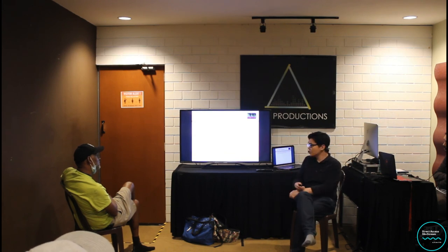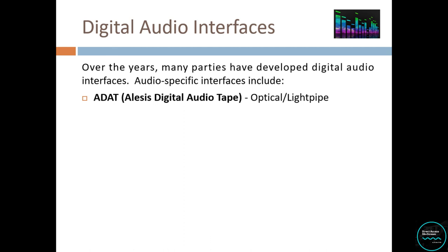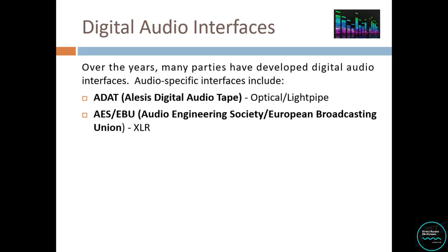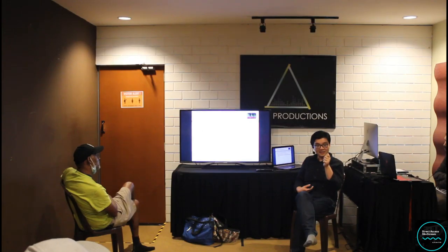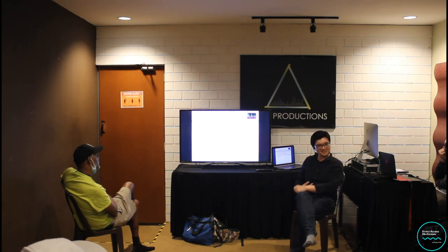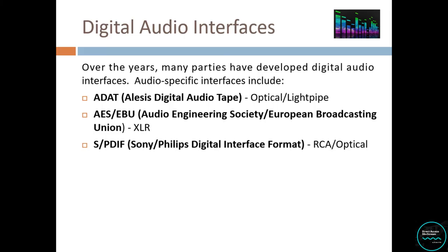These interface formats are developed by different manufacturers. Your audio interfaces will often have these as expansion options. ADAT (Alesis Digital Audio Tape) uses an optical cable or light pipe. AES/EBU (Audio Engineering Society / European Broadcasting Union) is transmitted over an XLR cable — the exact same cable used for mic signals can also carry digital signals.